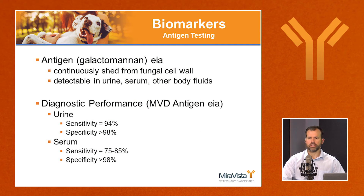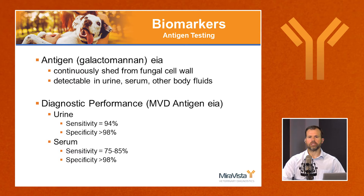Organisms won't be found in every case, and that's where non-invasive biomarkers become important. The most accurate and useful non-invasive test is antigen detection with an enzyme immunoassay. The antigen is galactomannan, a cell wall component constantly produced and shed into body fluids. Urine is the sample of choice, offering the highest sensitivity; serum loses a little sensitivity but retains relatively high specificity for fungal versus non-fungal. There is some cross-reactivity with other organisms, most specifically Blastomyces, and lesser cross-reactivity with Coccidioides.